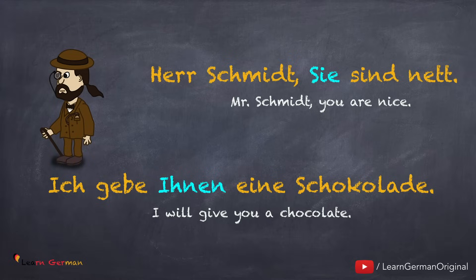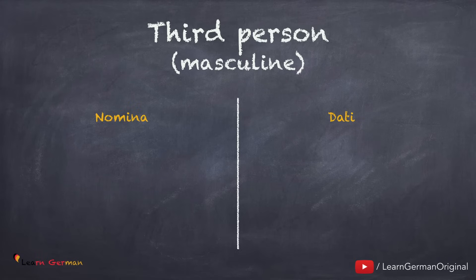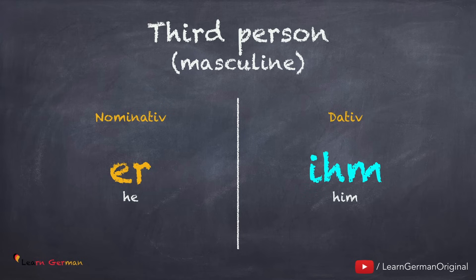Let's see how to use it: 'Herr Schmidt...' The next one — third person masculine: in Nominativ it's er, and in dative it changes to ihm.